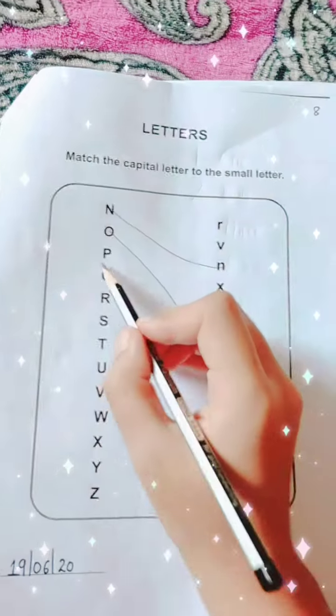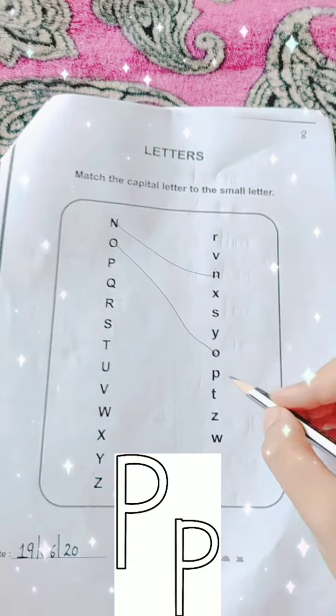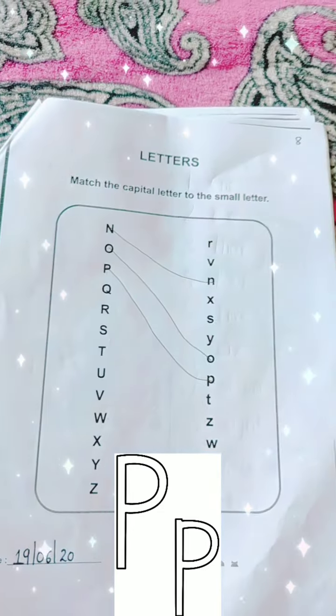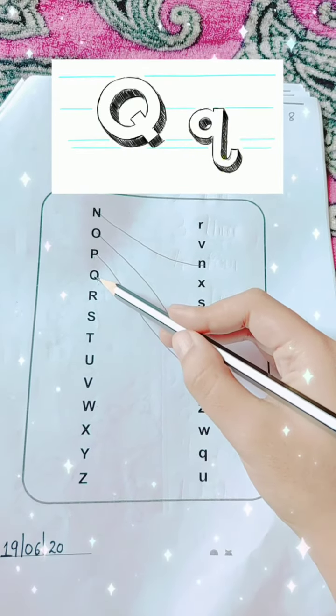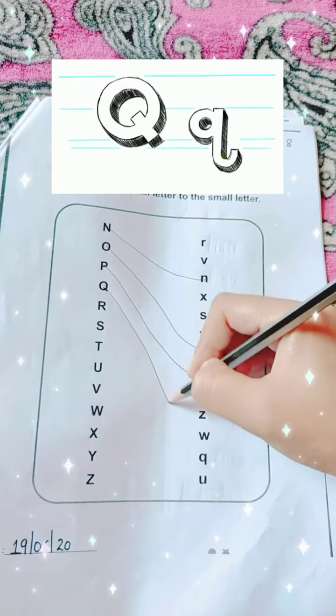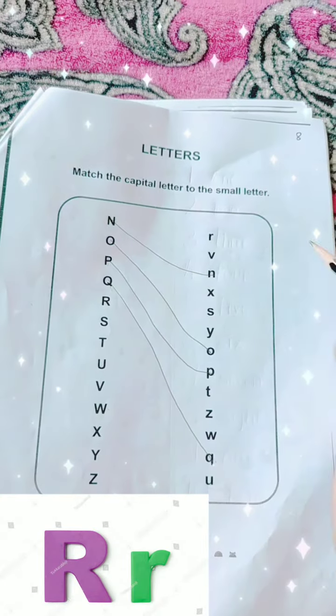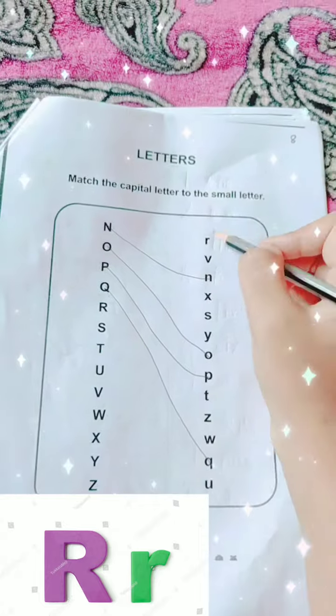Next is capital P. Capital P with small p. Done. Capital Q. Capital Q to the small letter Q over here. On this side. Next is R. This is capital R. Where is small R? Here.